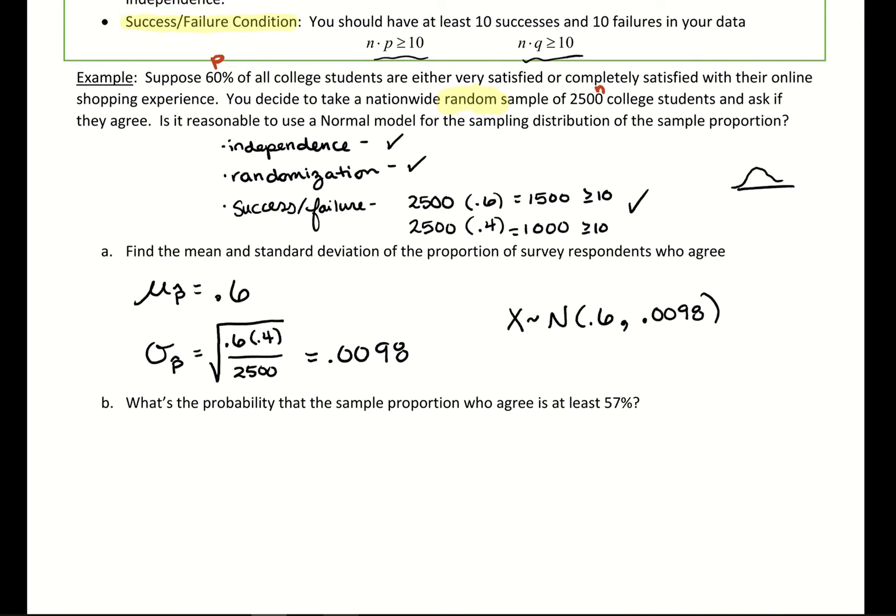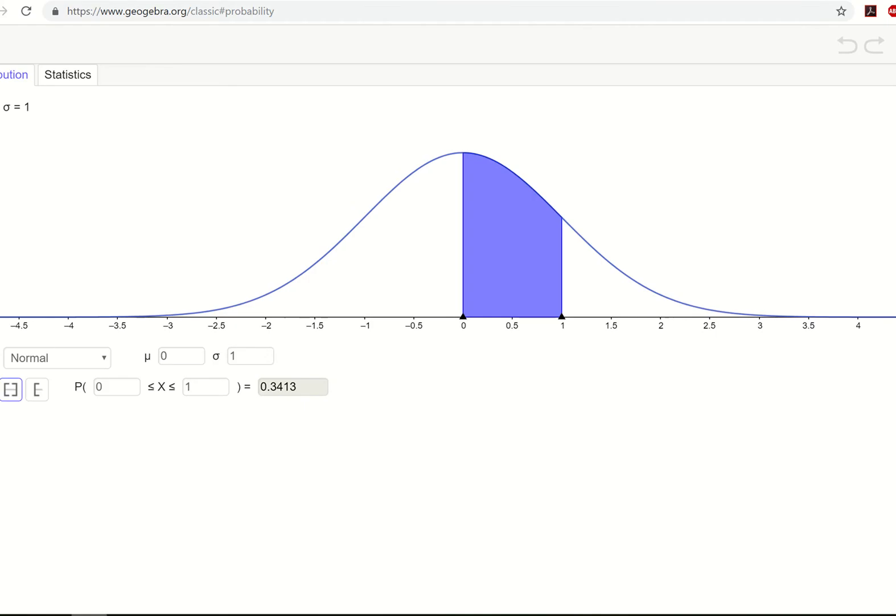So what's the probability that the sample proportion who agree is at least 57%? And this is the sample proportion we could throw in there of the 2,500. So that we're taking those 2,500 people. If we take that sample, what's the probability of seeing at least 57% coming through? So our distribution is that we expect 60% to come through. And we want to see if we talk to these 2,500 people, what's the probability of being 0.57 or lower? So we'll use our distribution there. So we're going to go to GeoGebra.